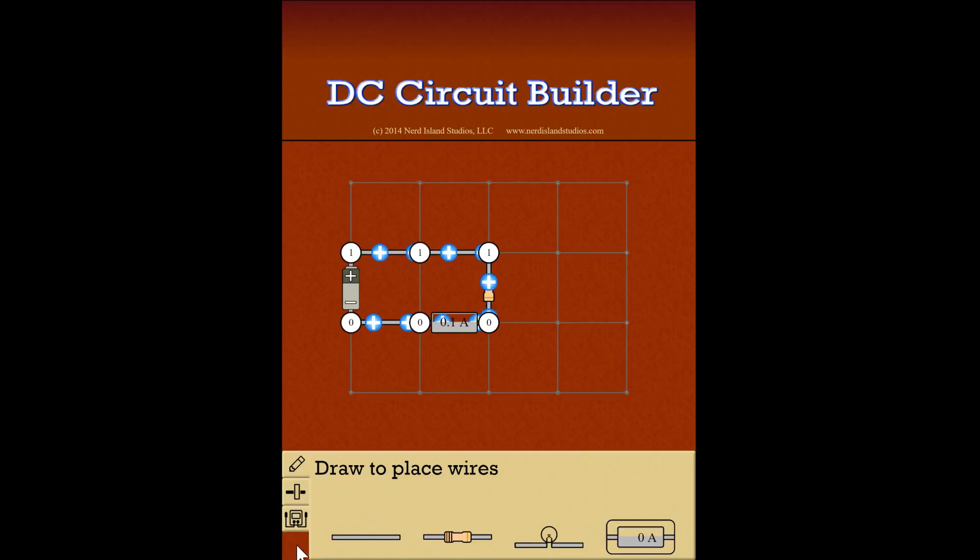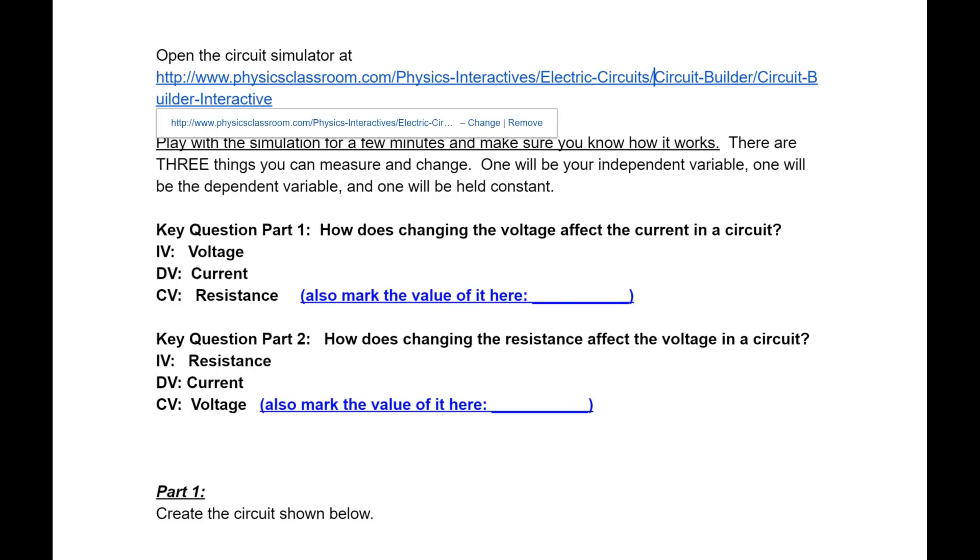And you all learned in class that positive charges, which are protons, do not move. It is actually the electrons that are moving. It's a little bit confusing, but that's kind of the conventional way scientists have agreed to talk about electricity and circuits.